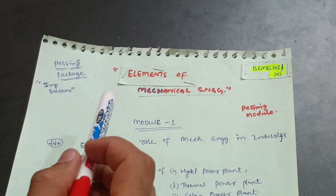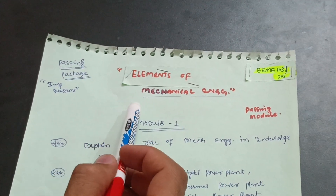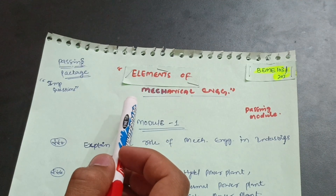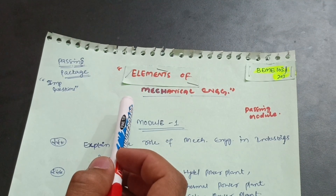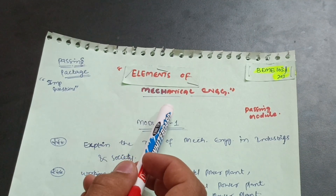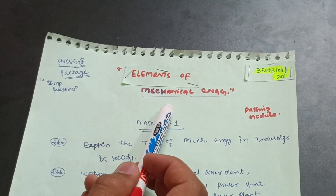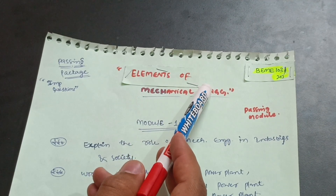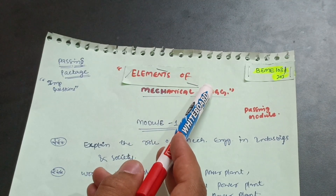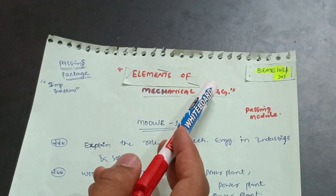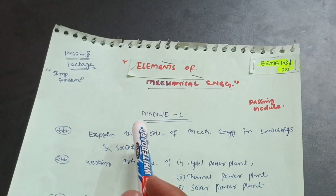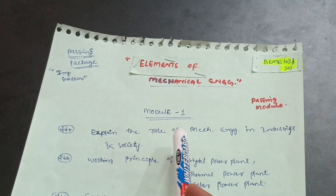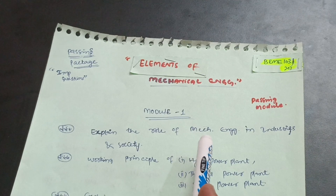Hello everyone, welcome back to my channel. Today I am with another passing package video — important questions video for Elements of Mechanical Engineering. The subject code is B EME 103 or 203. Let me discuss the passing module, starting with Module 1, where you have to focus on some important questions.